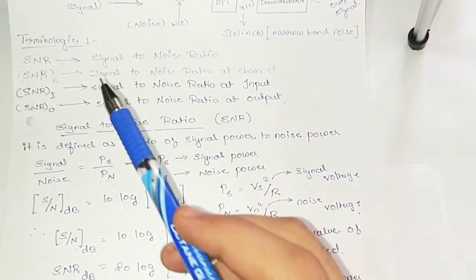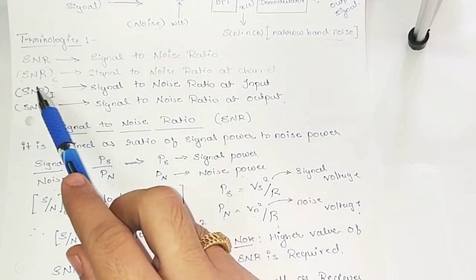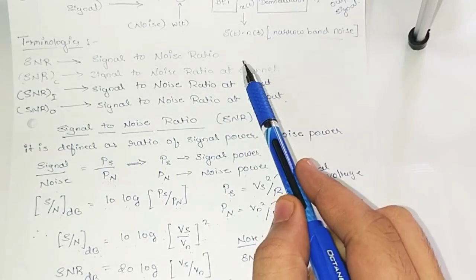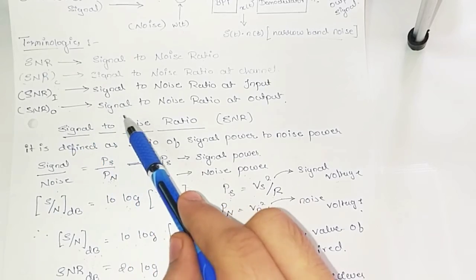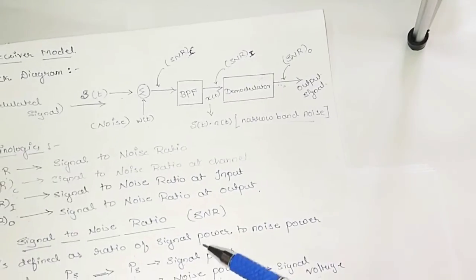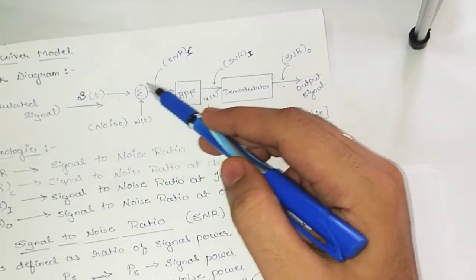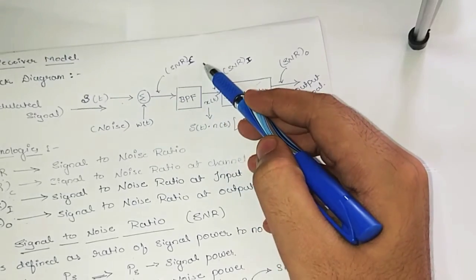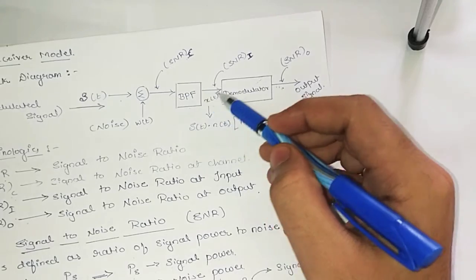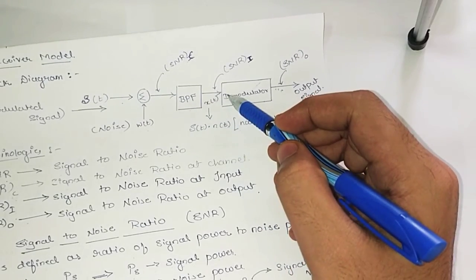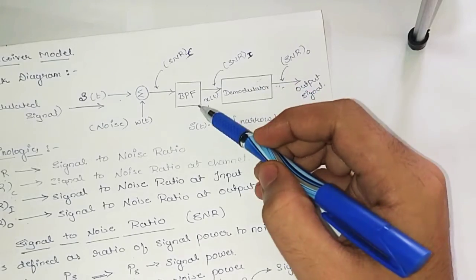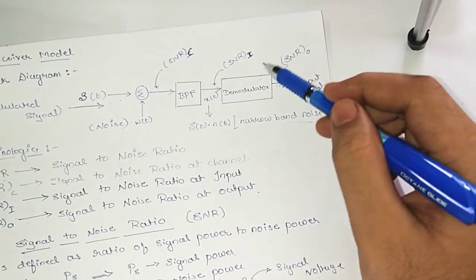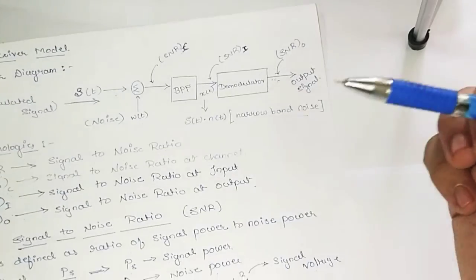Now we will see the terminologies. SNR is signal to noise ratio. SNRC is signal to noise ratio at the channel. SNRI is signal to noise ratio at the input. SNRO is signal to noise ratio at the output. We are getting the signal from the channel — so that is SNRC. The signal at the input to the demodulator is SNRI, and the output of the demodulator gives SNRO. Another concept, figure of merit, will be explained later.